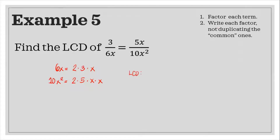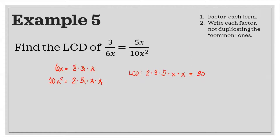To get the LCD, we write each factor but do not duplicate the common ones. The common factor is 2, so we write 2 once. Then we include 3, then 5. Since x appears in both terms, we write x, and then the second x from x squared. Multiplying: 2 times 3 is 6, times 5 is 30; and x times x is x squared. So our LCD is 30x squared.